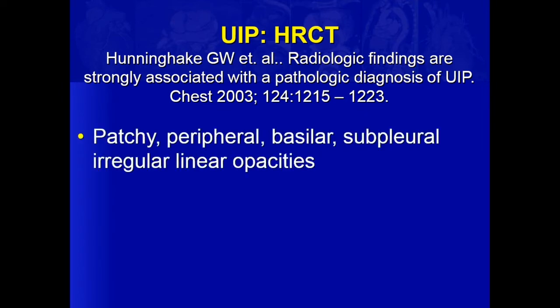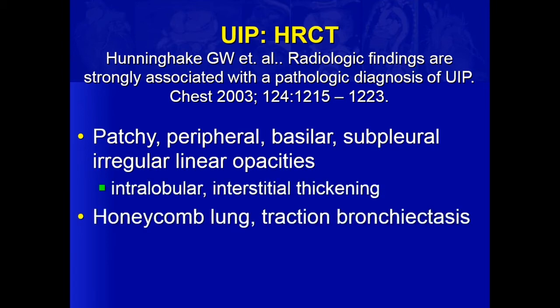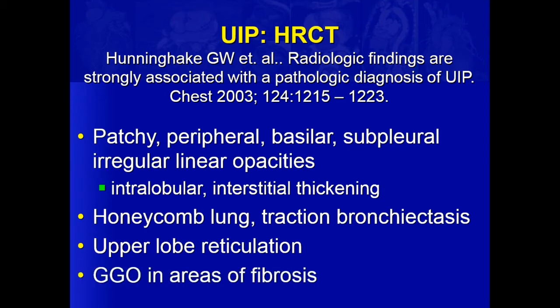What we know right now with UIP — going all the way back to 2003, even before that — a number of studies since then have duplicated these findings. When we see these patterns on CT: patchy, peripheral, basal, subpleural, irregular, linear and reticular opacities; intralobular interstitial thickening or intralobular lines; honeycomb lung; and traction bronchiectasis with a little bit of upper lobe findings. The findings are basal predominant, but we see things in the upper lobes, and if you see ground glass opacity in areas of fibrosis, this is what UIP looks like.